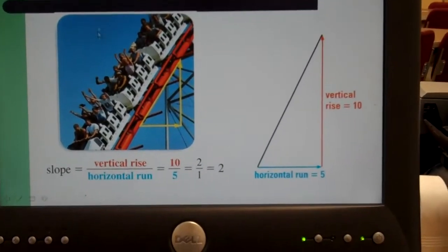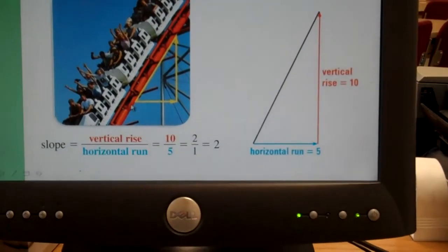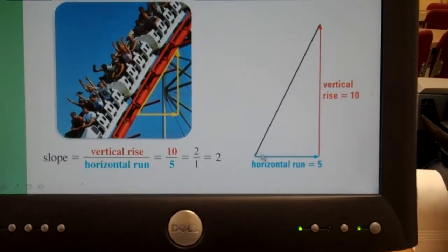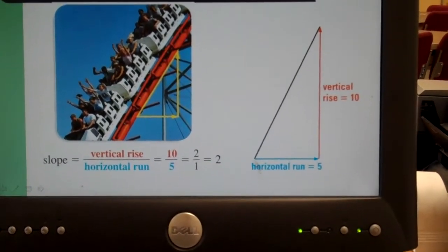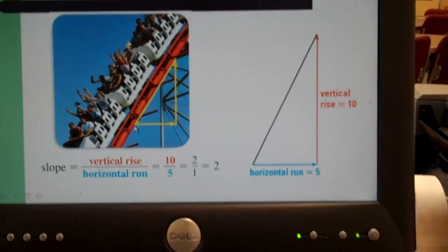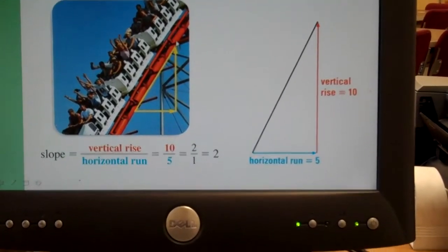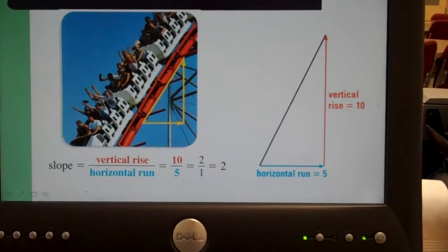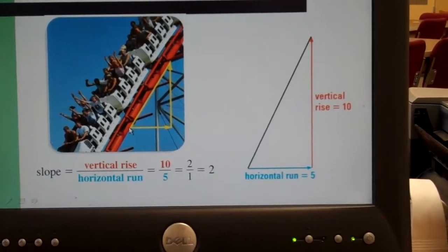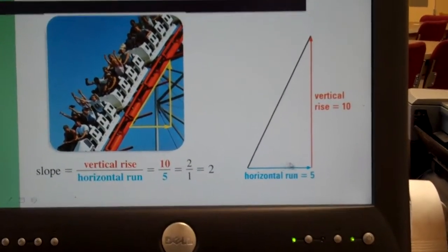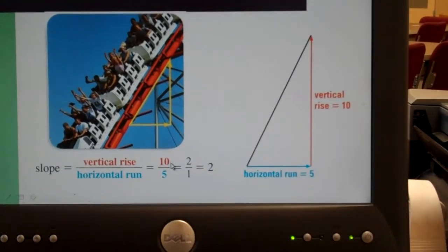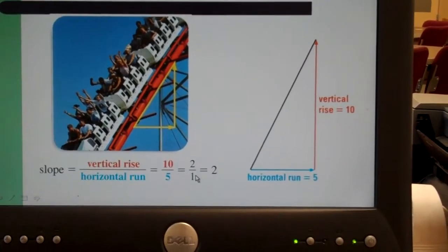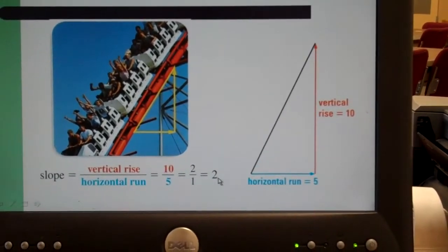If we look at a real world example, here's a roller coaster track and it's going up ten feet as it goes over five feet. And again, we say up because we read from left to right. So even though these kids look like they're going downhill and they are, we're reading the graph from left to right. And the slope would be ten over five, which simplifies to two over one and simplifies further to just two.